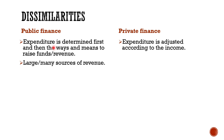Second, the government has large and many sources of revenue, whereas private finance has limited sources of income. At times of financial difficulty, the state can raise internal loans from its citizens as well as external loans from foreign countries or international institutions. In case of private individuals, all borrowings are external in nature.